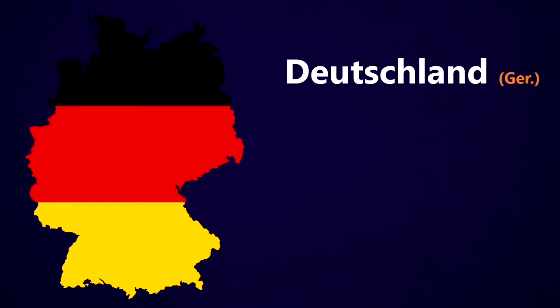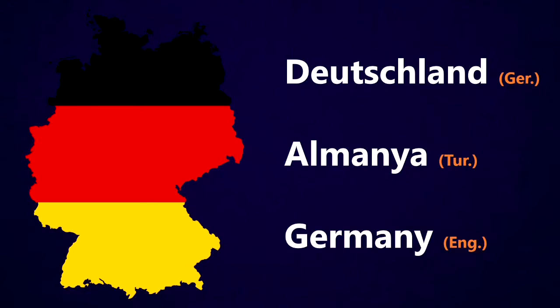So let's start with this one. What do we call this place? Well, the people who live there call it Deutschland. In Turkey, they call it Almanya. But in English, we call it Germany. So this shows us that it can be sometimes difficult to know what to call a place or the people from that place in any language that we're learning.